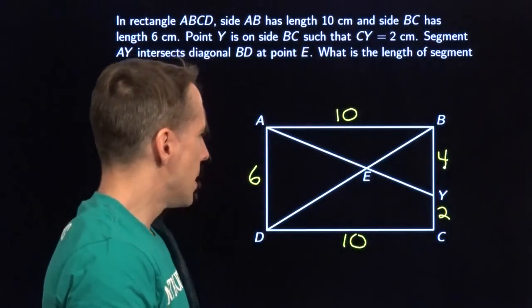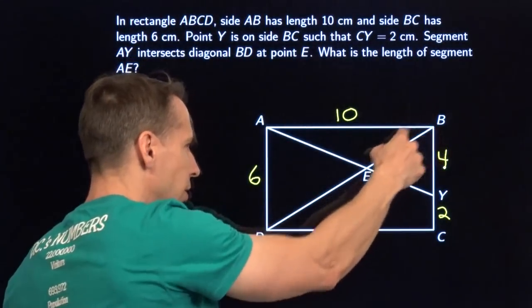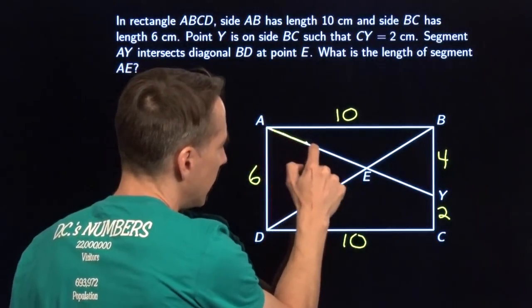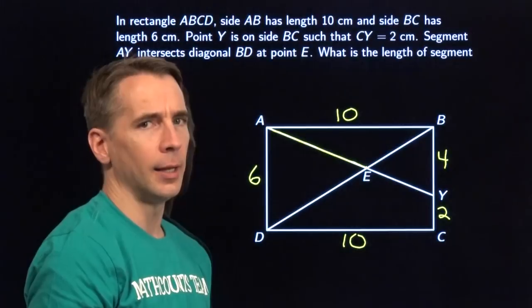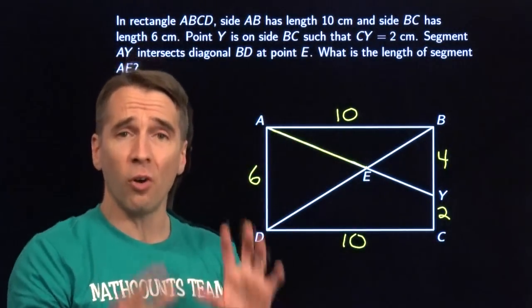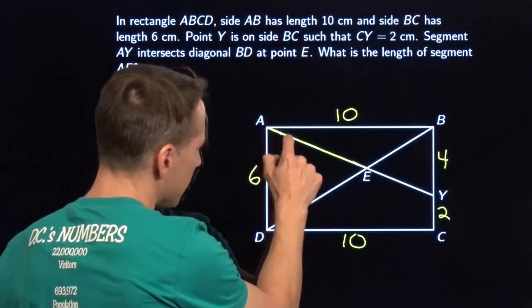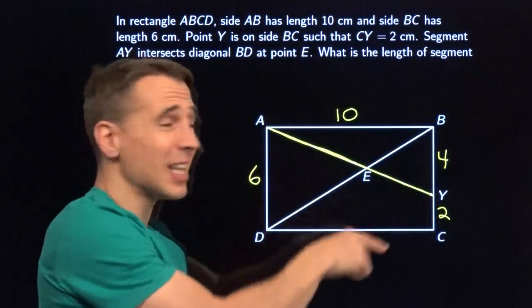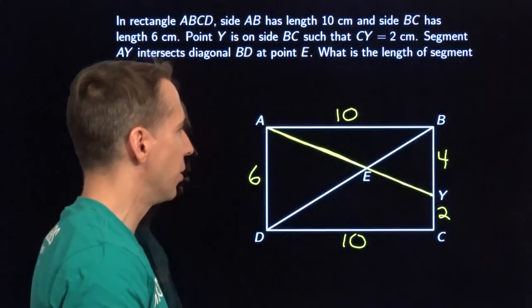Label the diagram just like that. Alright, here we go. We need to figure out what AE is. This point E is where this diagonal intersects AY. So we're looking for this length right here. I'm not sure how to find that. But another thing Harv has taught me is if you can't figure out exactly what you're looking for, go find some other stuff.